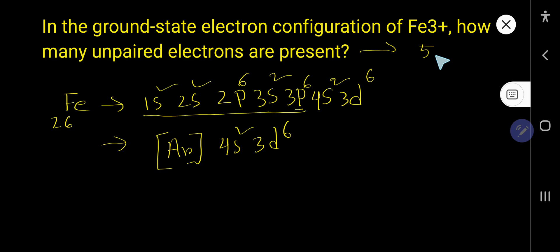Let me explain why Fe3+ has 5 unpaired electrons. To find out the unpaired electrons in Fe3+, you need to write the electron configuration of Fe3+.